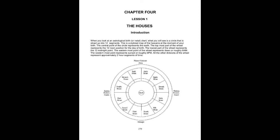The central point of the circle represents the earth. The topmost part of the wheel represents the 12 noon position for the day of your birth. The lowest part of the wheel represents the 12 midnight point. The easternmost point of the wheel represents dawn, or roughly 6 a.m. The westernmost point represents sunset, or roughly 6 p.m. All the other divisions of the wheel represent approximately 2-hour segments of time.